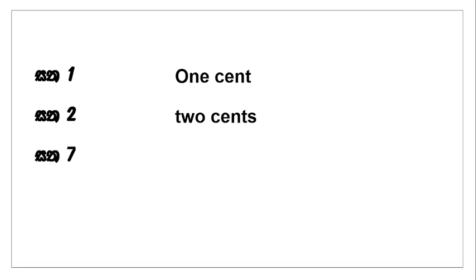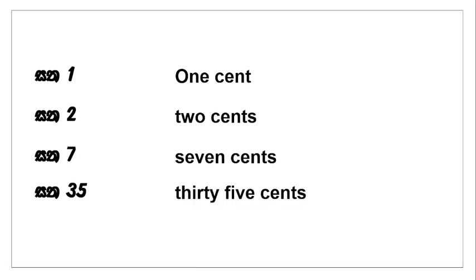Essekutu yano. Sata ekka — one cent. Sata dekka — two cents. Sata hatta — seven cents. Sata tispa — thirty-five cents. Sata asu — eighty cents. One cent, two cents, seven cents, thirty-five cents, eighty cents.